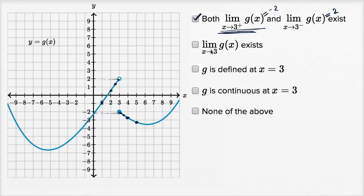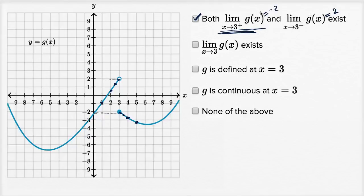Now, does the overall limit of g of x as x approaches three exist? In order for this to exist, both the right and left-hand limits need to exist and approach the same value. We saw both one-sided limits exist, but they aren't approaching the same value — from the right we approach negative two, and from the left we approach two. So this overall limit does not exist, and I will not check that box.